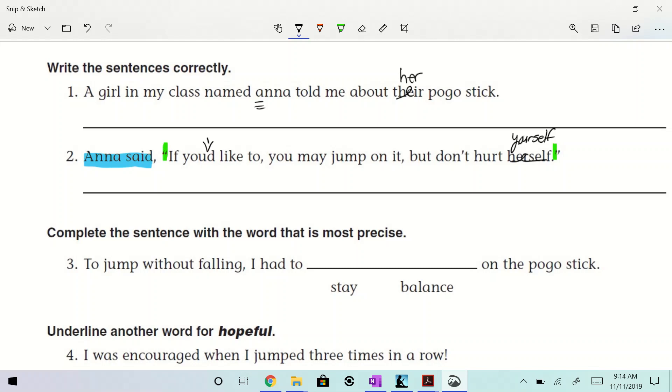Go ahead, Toby. If you'd like to. No, I like it there. If you'd like to, you may jump on it, but don't hurt yourself. I think it's a dependent clause if you'd like to. Are we good? I think we're good. Let's keep rolling.